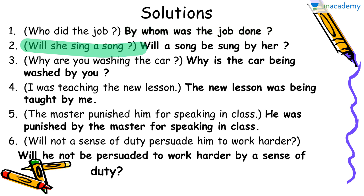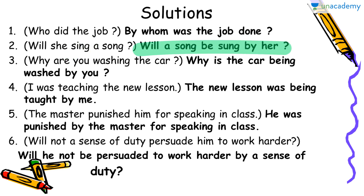The second sentence: Will she sing a song? Let's focus on the helping verb and main verb. 'Will' is talking about the future; after 'will' we have the verb in first form. This combination is used in simple future tense. So it will be changed as: Will a song be sung by her?